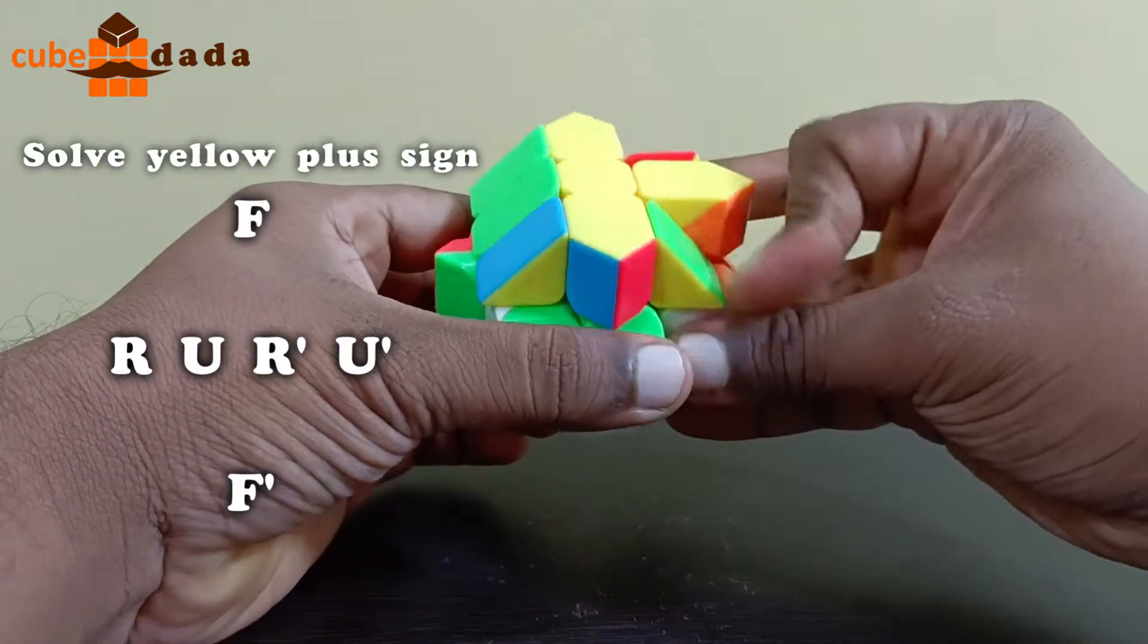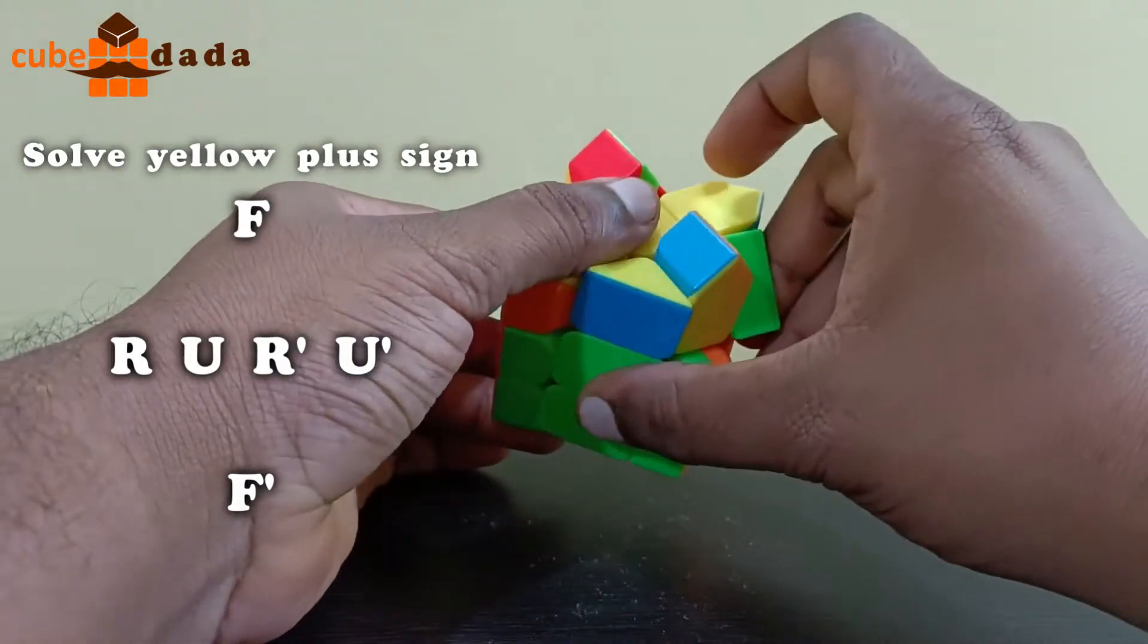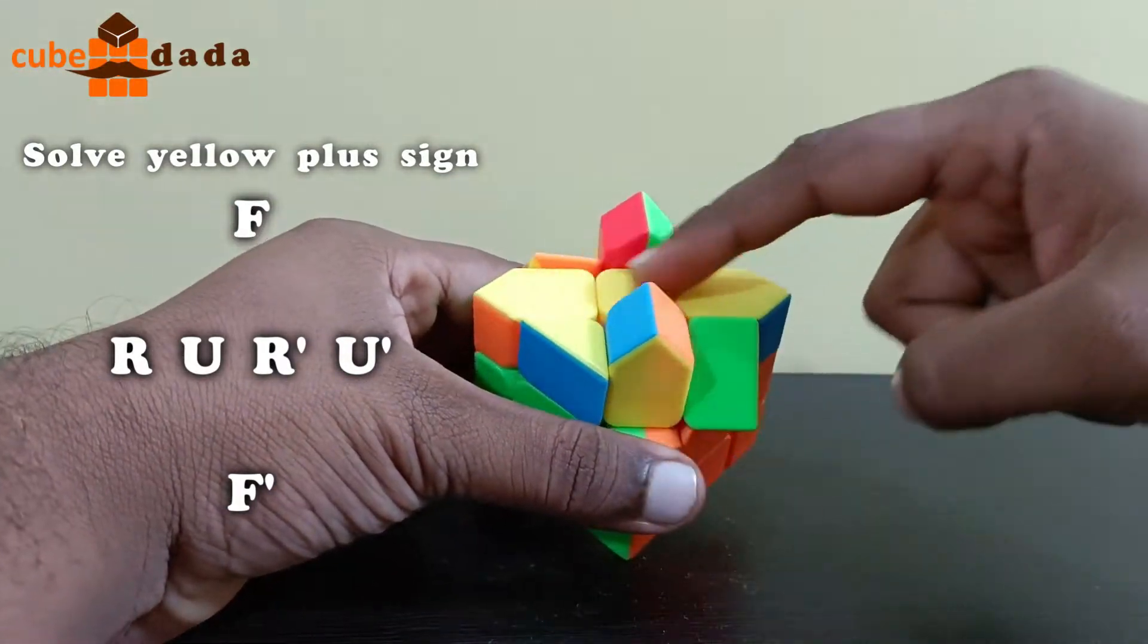F, R, U, R dash, U dash, F dash. I got this straight line.